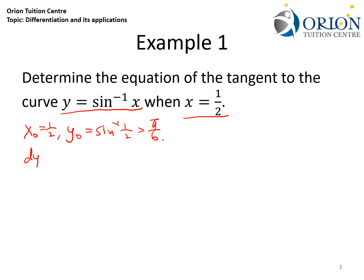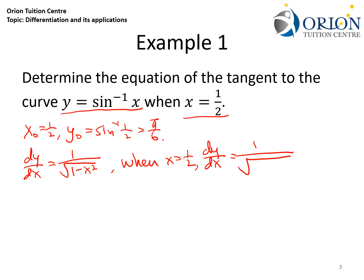Next, I need to find the gradient of the tangent, so I will find dy/dx. It will be equal to 1 over square root of (1 minus x²). When x equals one half, dy/dx will be equal to 1 over square root of (1 minus one quarter), which gives square root of three quarters at the bottom, which is the same as 2 over square root 3.